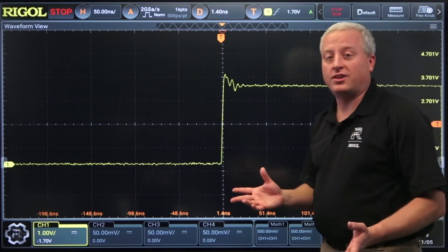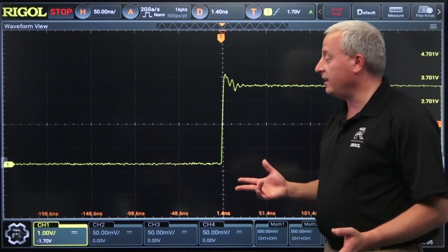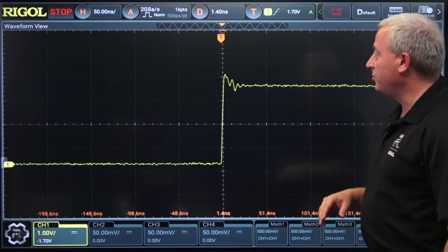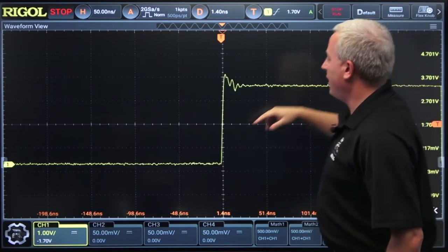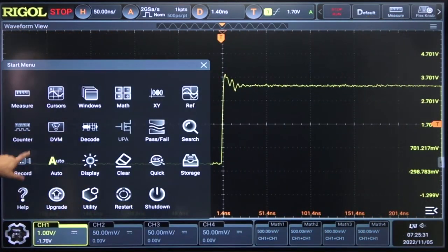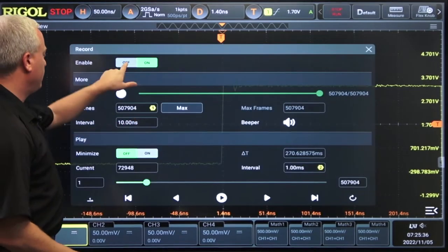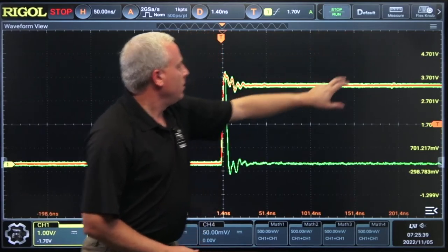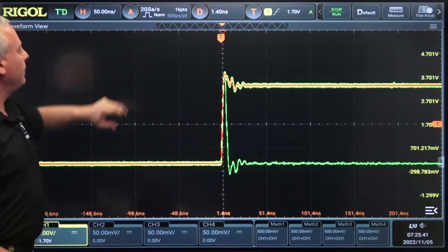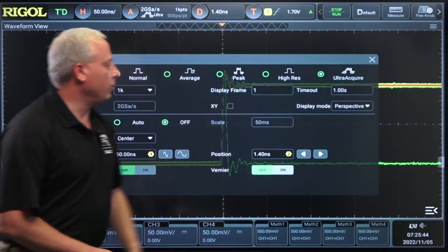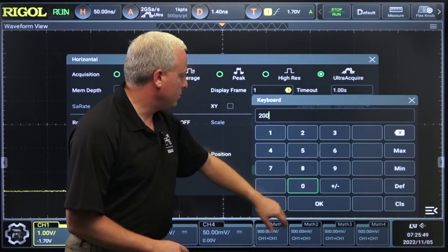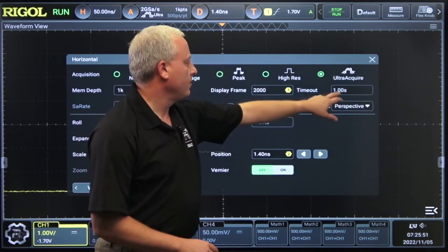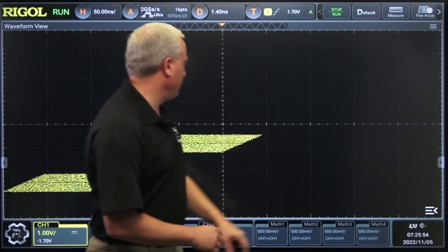Now the newest visualization technique built in to the DHO 4000 series and the DHO 1000 series oscilloscopes is what we call Ultra Acquire. So to get there, let's actually go back and turn off all that record mode. Turn this off. Now we can run that trigger again. Now let's go ahead and go to Ultra Acquire mode. Let's set this up to capture 2000 frames in a perspective mode. Let's see what that looks like.